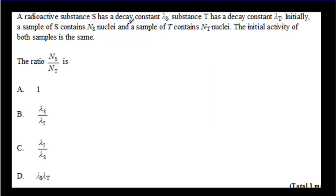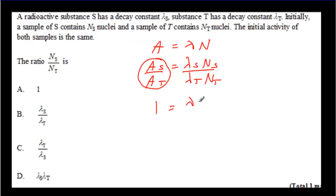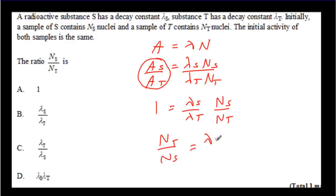Starting with the idea that activity equals lambda times N, we can write that for both substance S and substance T. Dividing those two expressions, if the two activities are equal, this equals 1 equals lambda_S over lambda_T times N_S over N_T. That means N_T over N_S equals lambda_T over lambda_S — that would be answer C.